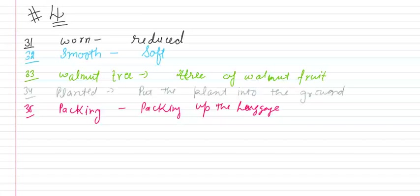Next is 36. 36 is trampled. Trampled means shook, kaampna. Trampled, shook means kaampna.